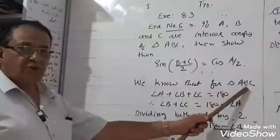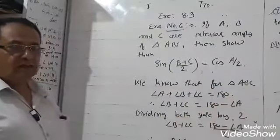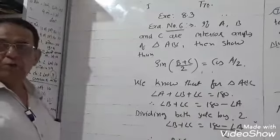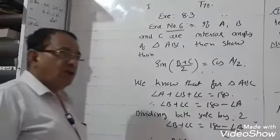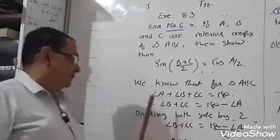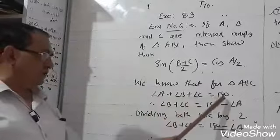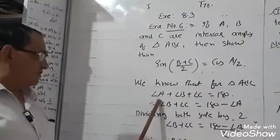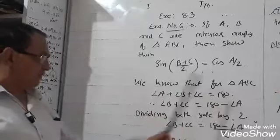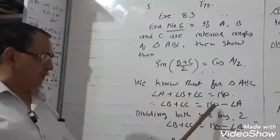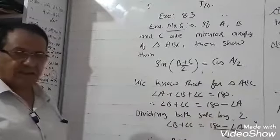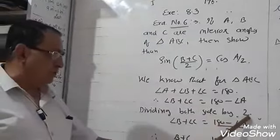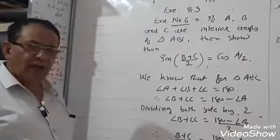We know that for a triangle, the sum of all angles is equal to 180°, according to the theorem of standard 9. So A plus B plus C is equal to 180°. Transferring A, we get B plus C is equal to 180° minus A.